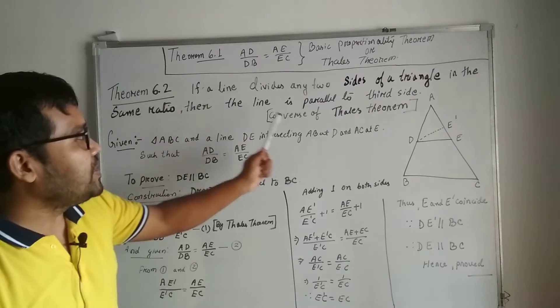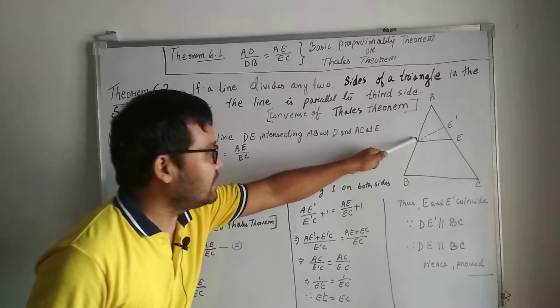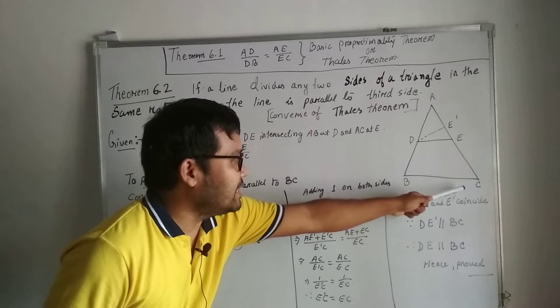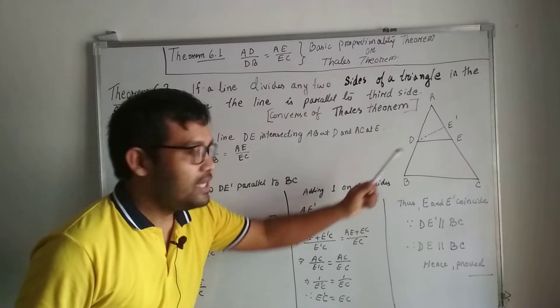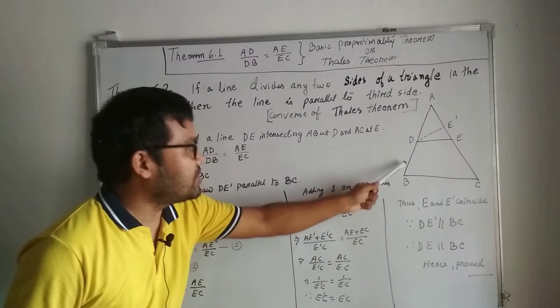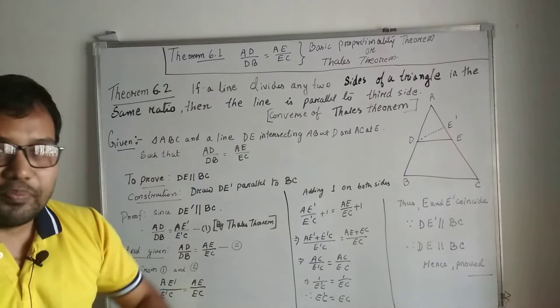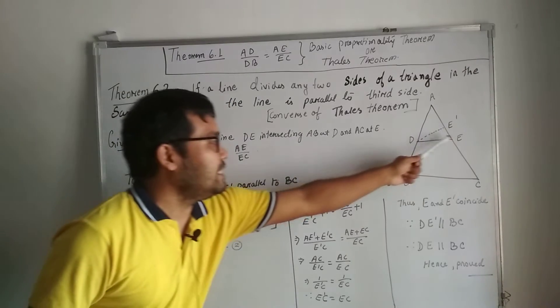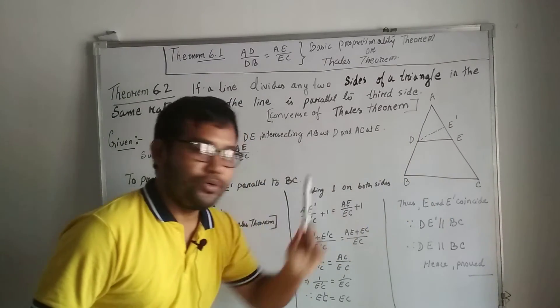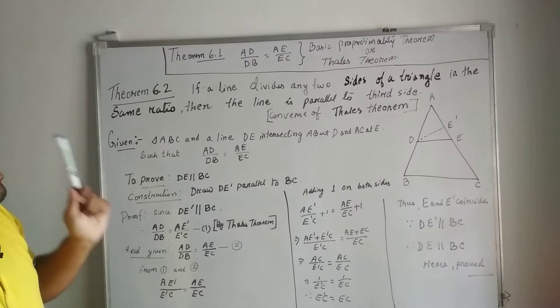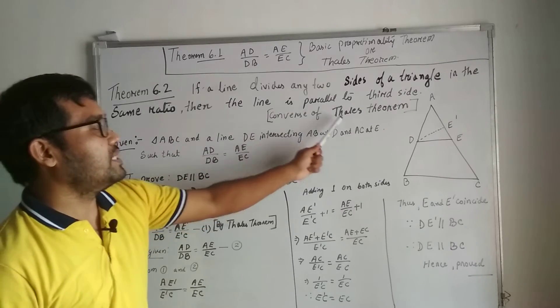ABC is a triangle, DE is the line that divides the two sides in the same ratio, then we need to prove DE parallel to BC. So basically this is the converse of Thales theorem.